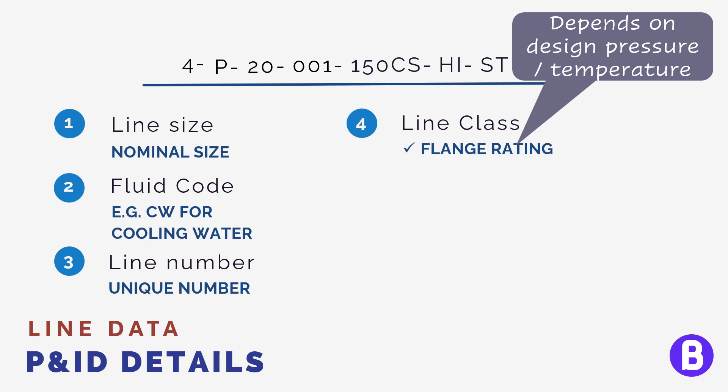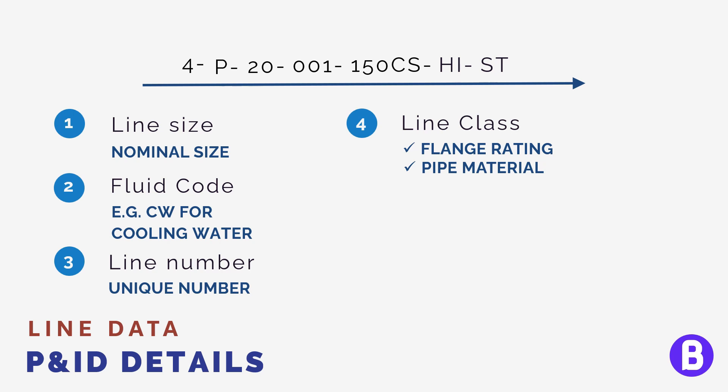If the design temperature is higher, then the maximum pressure it shall withstand shall be lower. A 300 rating is expected to withstand around 45 bar gauge. Then we shall have 600, 900, and 1500 pounds which can withstand much higher conditions and so on. So let's say it's 150 rating and its material is carbon steel.